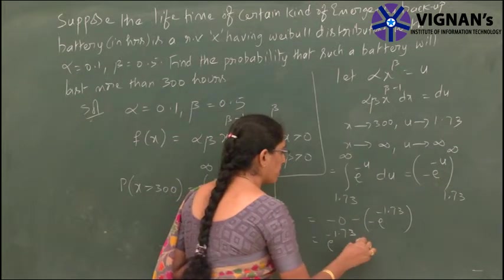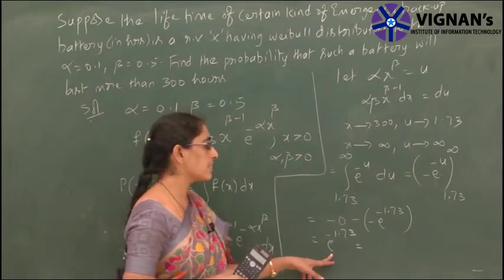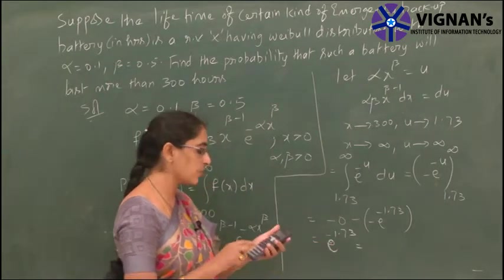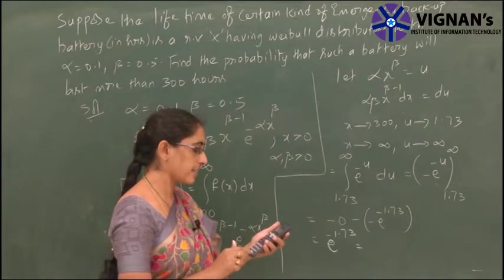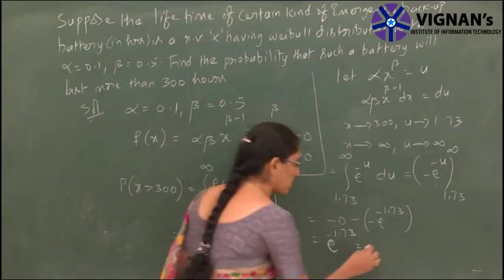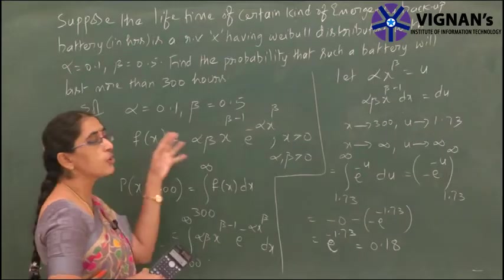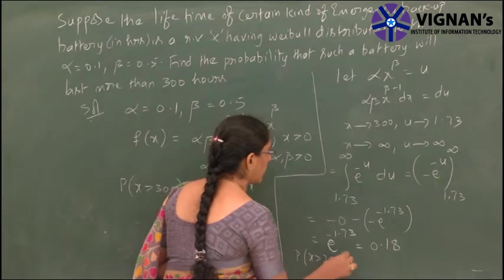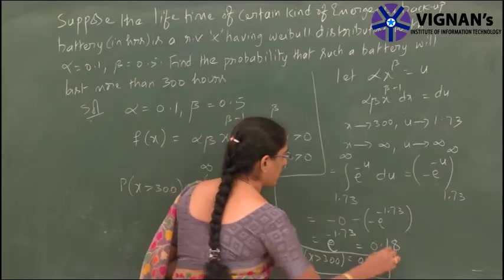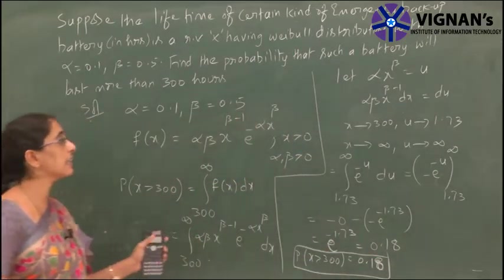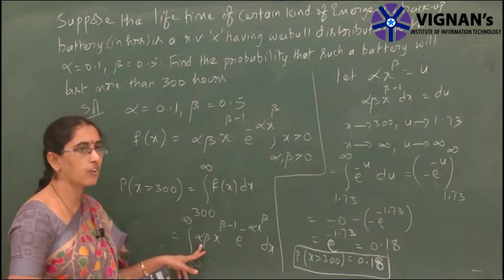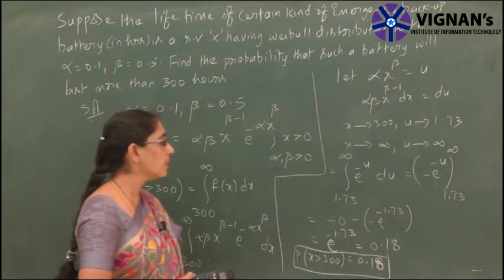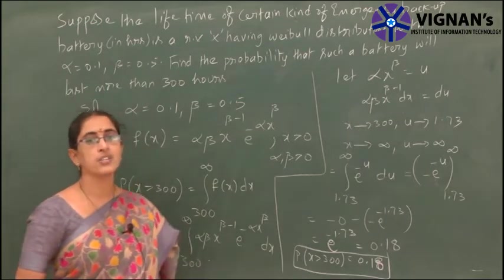So the result is e^(-1.73). Using the calculator, e^(-1.73) equals 0.18. Therefore, the probability that the battery will last more than 300 hours is 0.18. Either you can substitute the alpha and beta values directly or use the substitution method to simplify. Finally, P(X > 300) = 0.18.